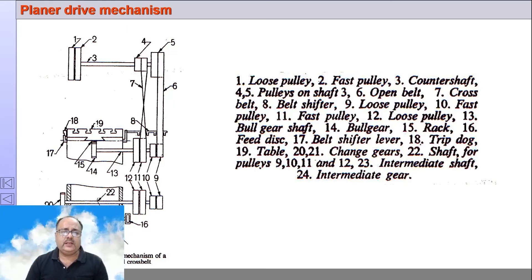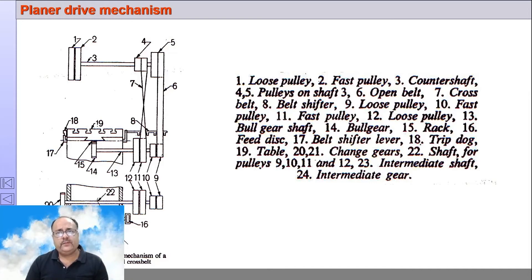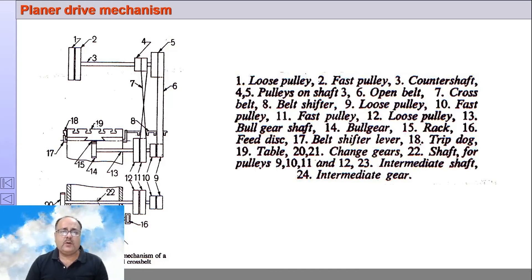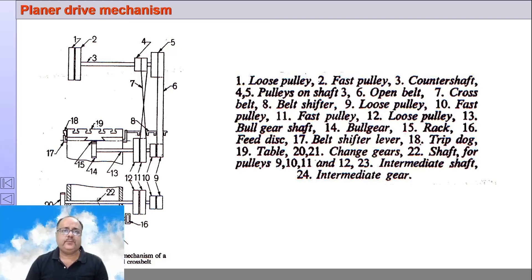I will explain the construction first and then the working. Note that there is a loose pulley 1 and tight pulley 2. Tight pulley 2 means it is mounted on shaft 3 — if 2 rotates, 3 rotates, and vice versa. Pulley 1 is loose so it has no impact on shaft 3. On the same shaft 3, there are two other pulleys: pulley 4 and pulley 5 are also mounted.